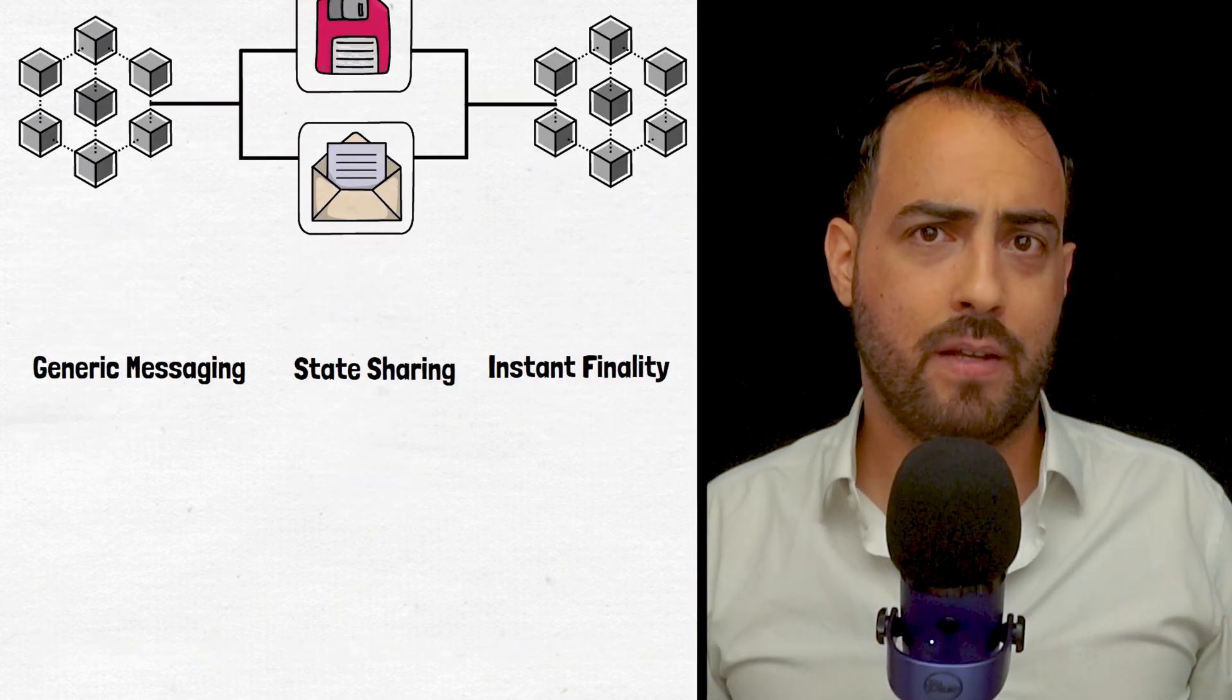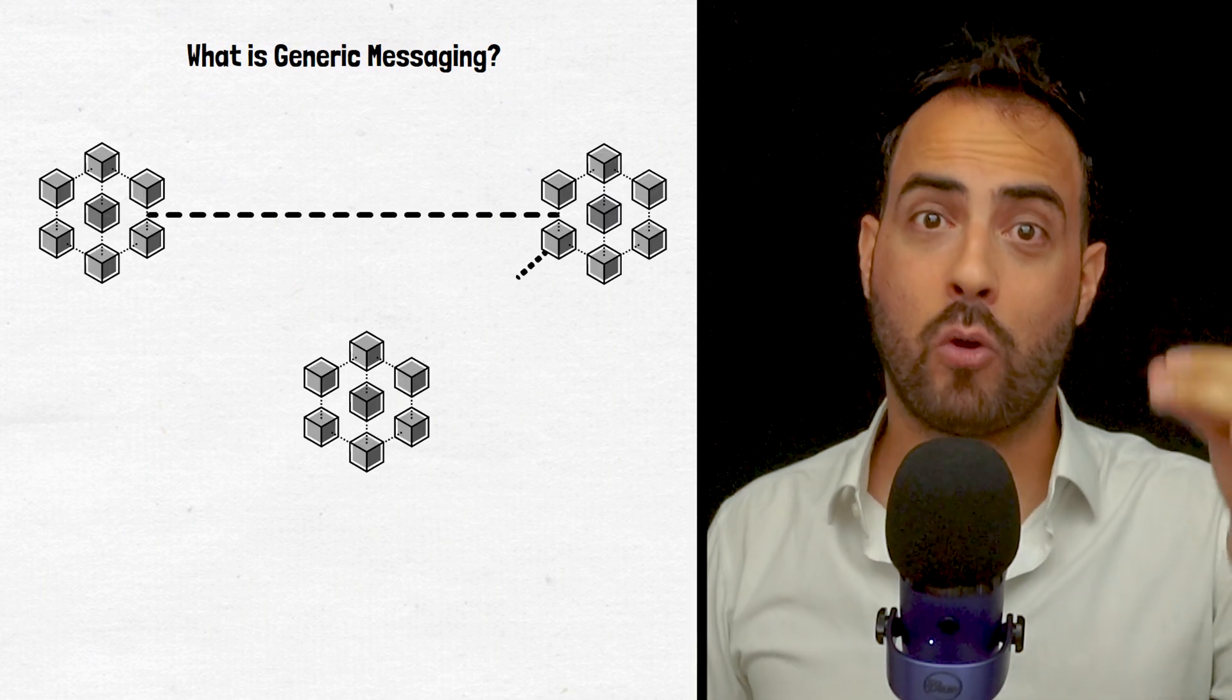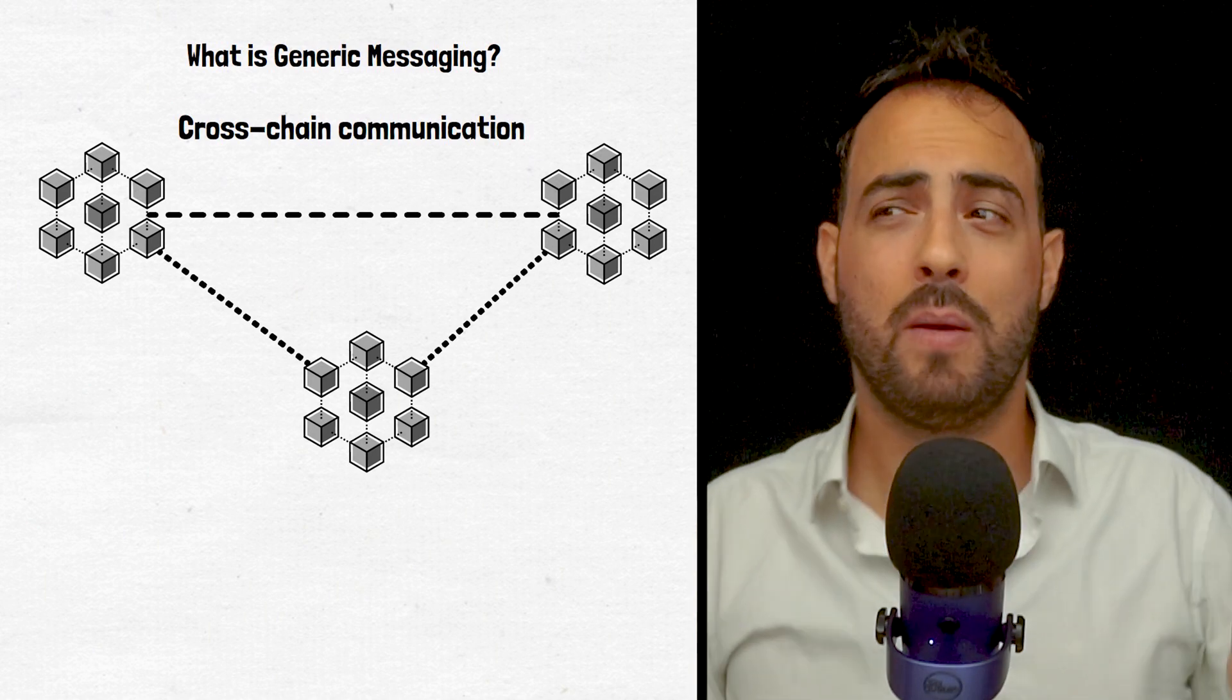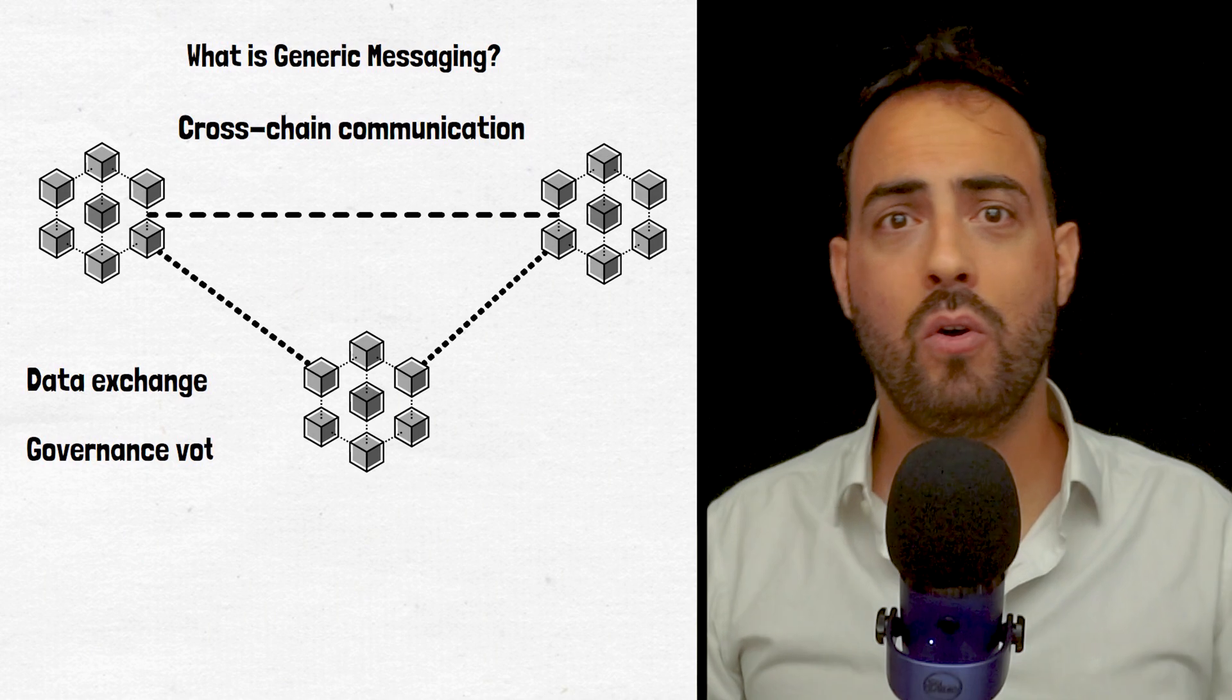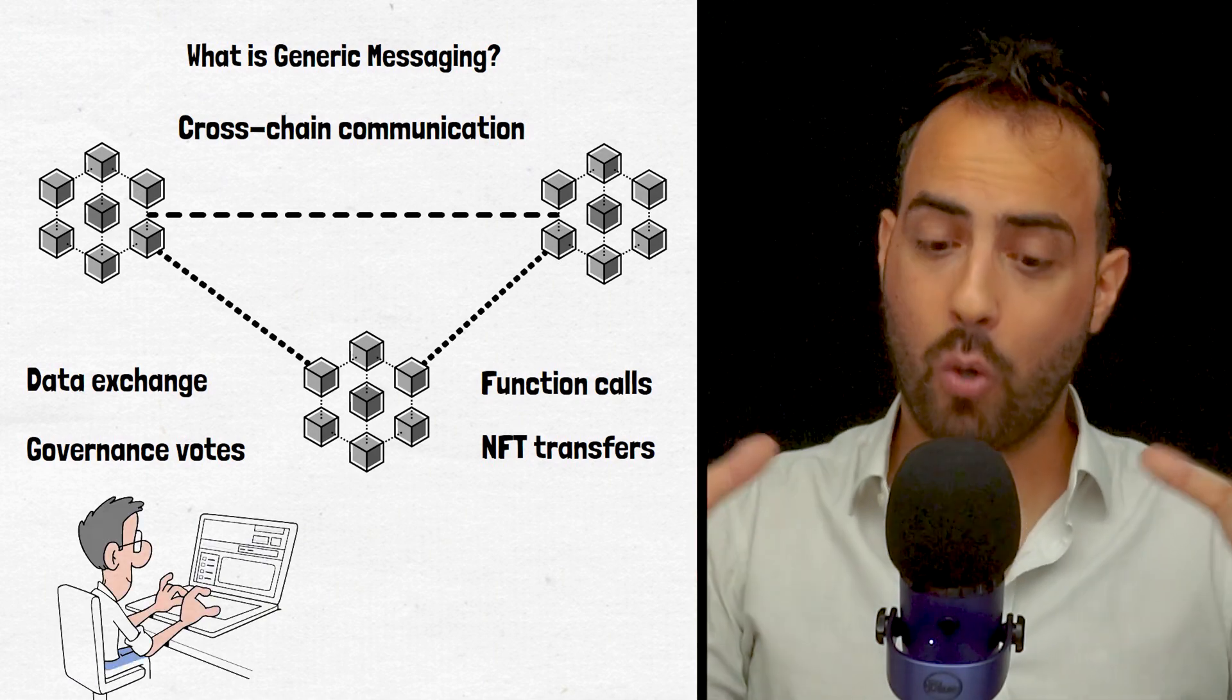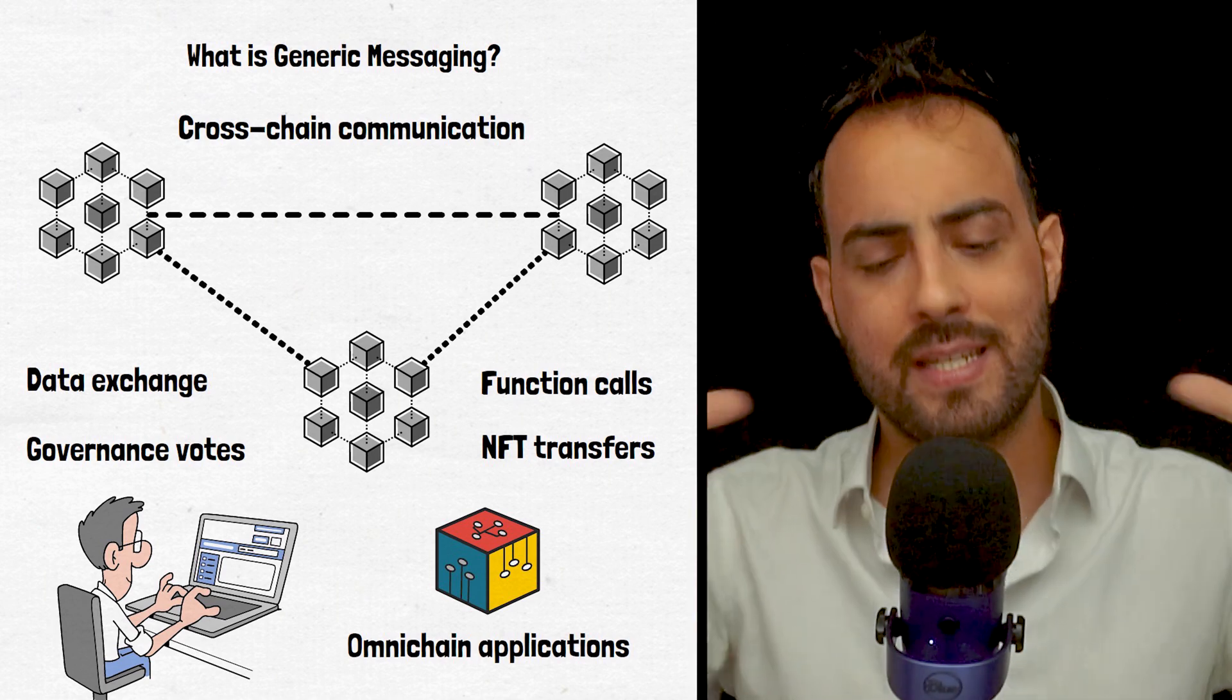To briefly explain, generic messaging is a feature created by Layer 0 that enables any type of cross-chain communication, not just asset transfers. This means Layer 0 can support any payload, be it data exchange, governance votes, function calls, or NFT transfers. This ultimately allows developers to create omni-chain applications that can leverage the features and advantages of multiple blockchains simultaneously.